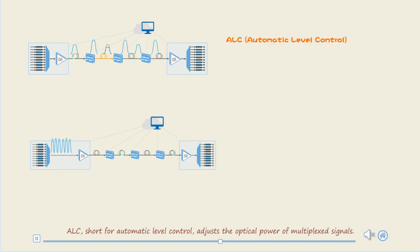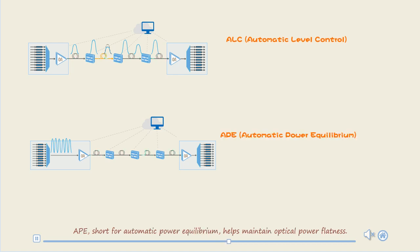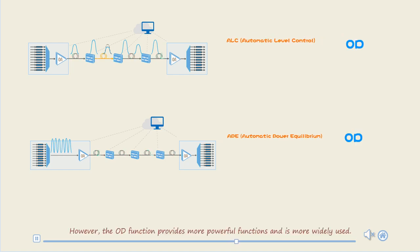ALC, short for Automatic Level Control, adjusts the optical power of multiplexed signals. APE, short for Automatic Power Equilibrium, helps maintain optical power flatness. However, the OD function provides more powerful functions and is more widely used.